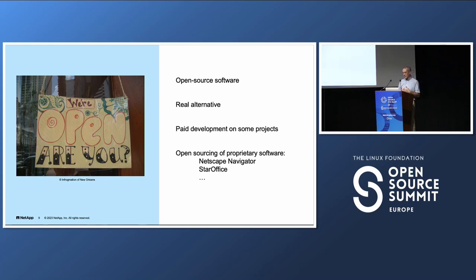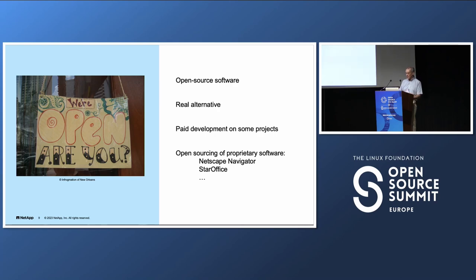Back then, a lot of features developed in open source were simply re-implementations of what was done in proprietary software. You'd look at the proprietary alternative and see they have these neat features — let's implement those too. But also at that time, we started seeing the first projects that got paid development, where companies actually figured it makes sense to go into that area. We got software — Netscape Navigator, StarOffice, then OpenOffice, then LibreOffice — companies just open sourced their software because it was the best move for them on the business side.